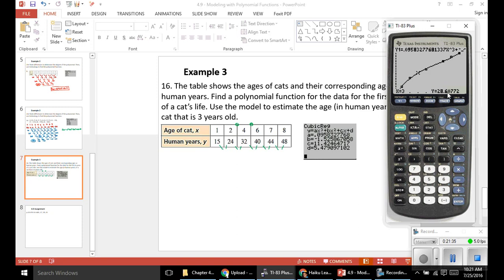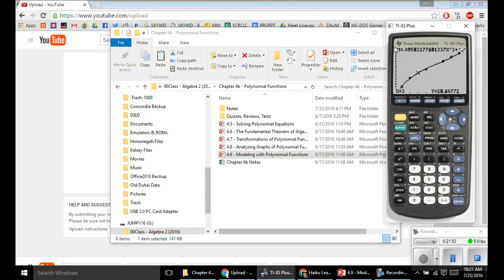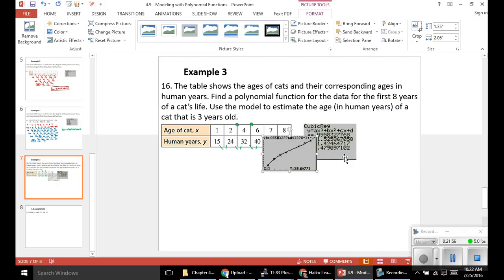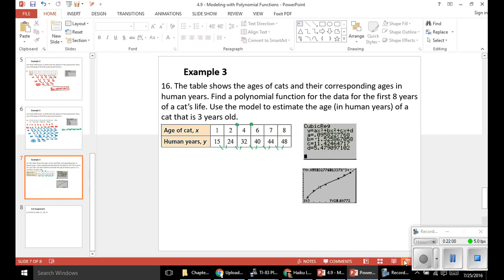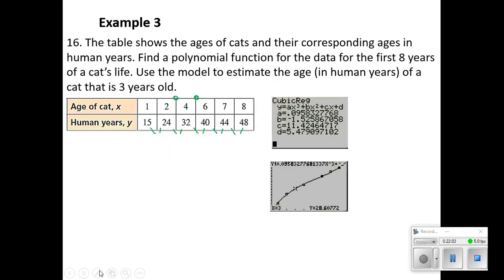You see that the height is 28.608. And it looks like from our data set, between the cat years of 2 and 4, the age in human years is between 24 and 32. So this answer perfectly makes sense. Based on the output of our calc value, which we got from our regression equation, we can say that the cat is 28.608 years old.